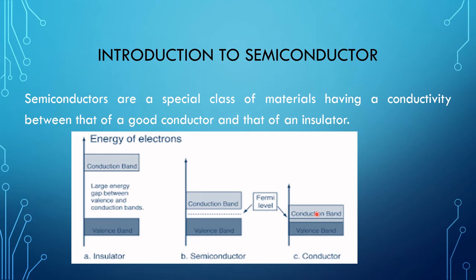This band is called the conduction band. According to Pauli's exclusion principle, it restricts the number of electrons that a band can accommodate. A partly filled band appears when a partly filled energy level produces an energy band, or when a totally filled band and a totally empty band overlap. The conduction band is partly empty, partly filled, or empty, and the full electron band is called the valence band. The energy bands are separated by a gap called the forbidden energy gap.